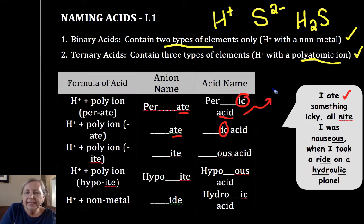That word acid tells you that your cation is the H+ cation. So 'I ate something icky.' Notice we do not drop that prefix there. We only change the suffix. So per-ate becomes per-ic acid. -Ate becomes -ic.